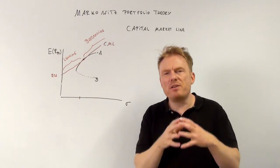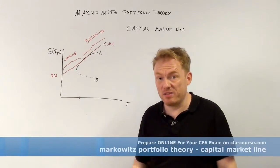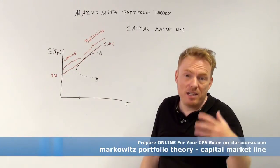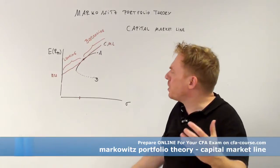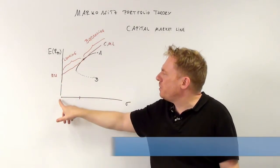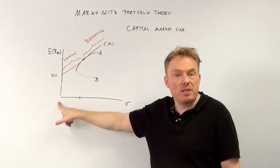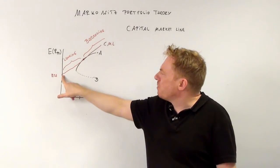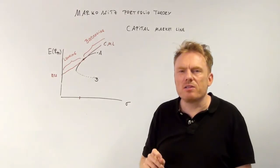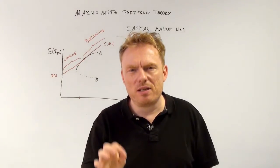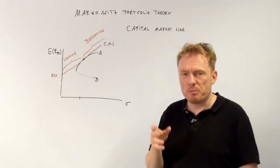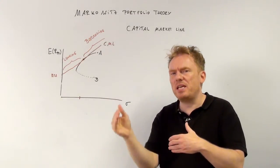Now we have a third asset: the so-called risk-free rate, and it is risk-free. There is no risk at all for the risk-free rate, which means it has a sigma of zero. We can put it here. The risk-free asset can now be combined with the portfolio of assets A and B.